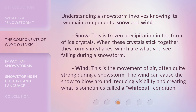Understanding a snowstorm involves knowing its two main components: snow and wind. Snow is frozen precipitation in the form of ice crystals. When these crystals stick together, they form snowflakes, which are what you see falling during a snowstorm.